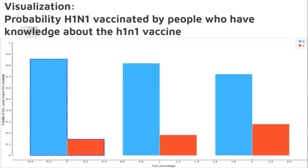The instructor explains that looking at the target column — H1N1 and seasonal flu — shows these are categorical binary values, confirming it is binary classification. The instructor repeats that the team is very confused and does not know what they are dealing with. The instructor asks directly: is it a regression or classification problem when you look at the dataset? The team did not show any snapshot of the dataset during the presentation.